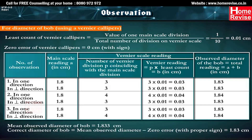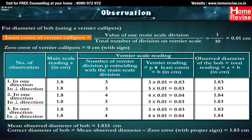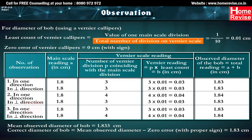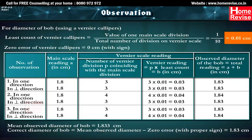For diameter of bob using vernier calipers: least count of vernier calipers = 1 main scale division / total number of divisions on vernier scale = 1/10 mm = 0.01 cm. Zero error of vernier calipers = 0 cm (with sign).